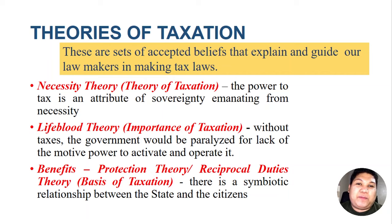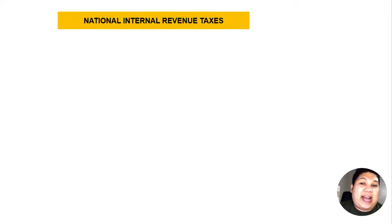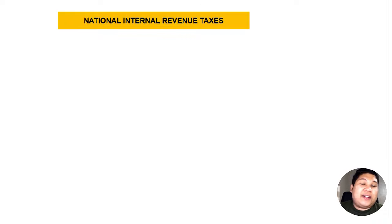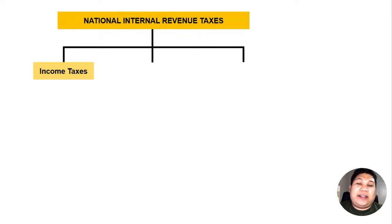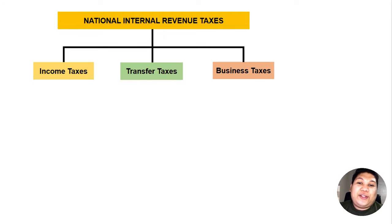After discussing the principles and theories of taxation, let's go to the overview of our national internal revenue taxes. Broadly speaking, we can categorize the national internal revenue taxes into three: income taxes, transfer taxes, and business taxes. These are the three main taxes imposed and collected by the national government.